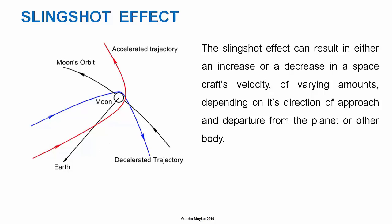The slingshot effect can result in either an increase or a decrease in a spacecraft's velocity of varying amounts, depending on its direction of approach and departure from the planet or other body. If the spacecraft approaches from the direction opposite to the orbital direction of the body providing the gravity boost, it will actually decelerate, shown by the blue arrow. If it gets a gravity assist in the direction of the orbital motion of the body, it will have an accelerated trajectory, shown by the red arrow.